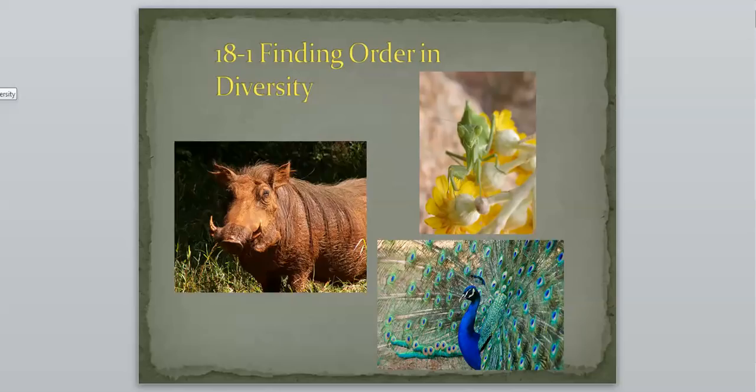It's going to be how we classify animals. You see, you got three pictures here. We got a warthog, a praying mantis, and a peacock down there. So we're going to figure out how we're going to group these things, why they're grouped the way they are, things like that.